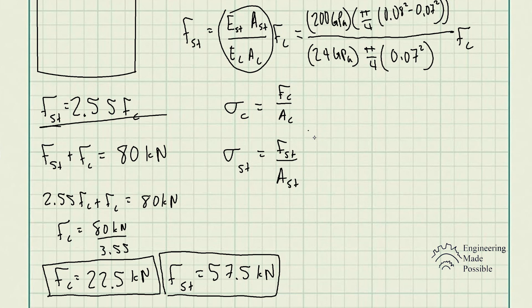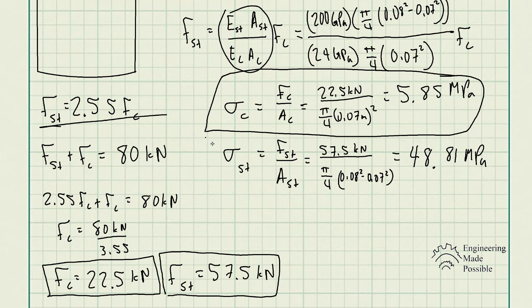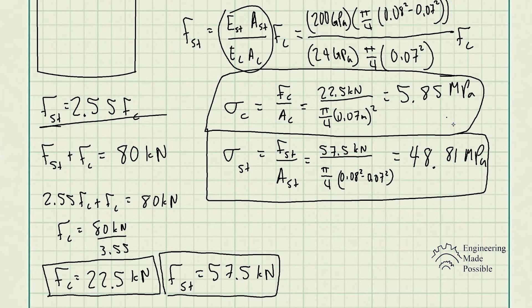The force supported by the concrete is 22.5 kilonewtons and the force in the steel is 57.5 kilonewtons. Dividing each by its respective cross-sectional area, we get the stress in the concrete as 5.85 megapascals and the stress in the steel as 48.81 megapascals. There is more stress in the steel, but the concrete helps in distributing the load. This is another application of the compatibility equation — the more you practice, the more obvious these additional relationships become beyond the standard equilibrium equations.